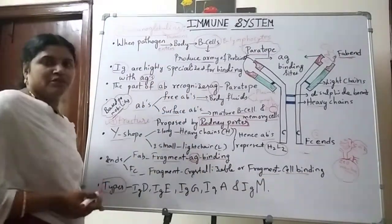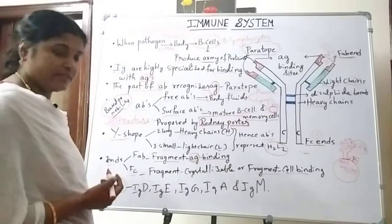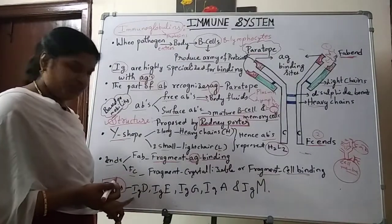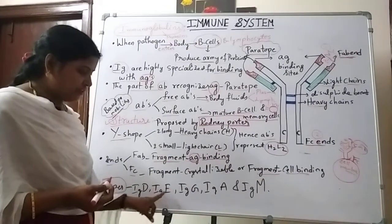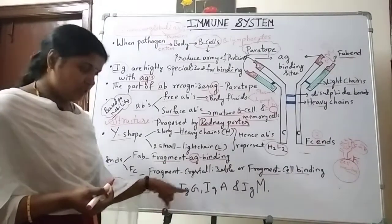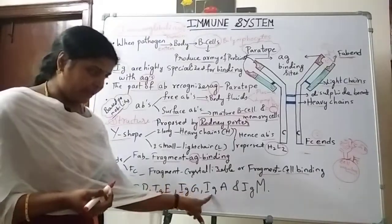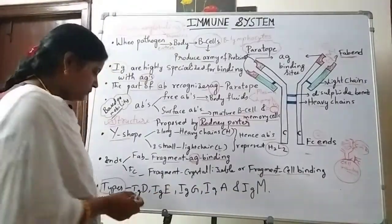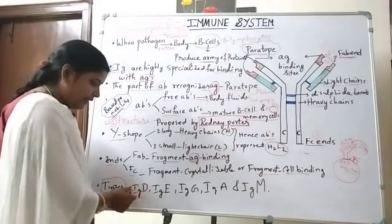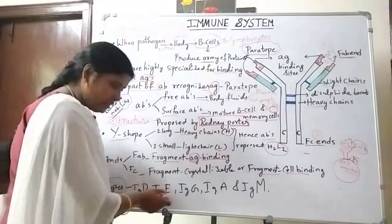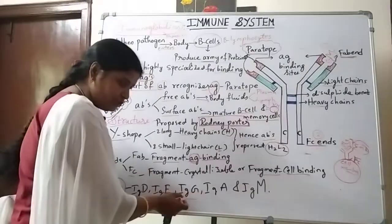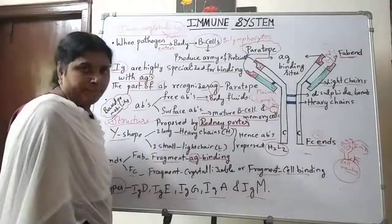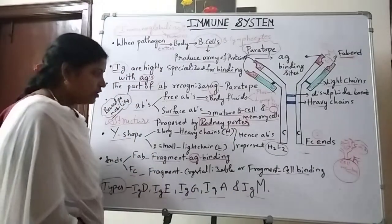The types of immunoglobulins are: IgD, IgE, IgG, IgA, and IgM — that is Immunoglobulin D, Immunoglobulin E, Immunoglobulin G, Immunoglobulin A, and Immunoglobulin M.